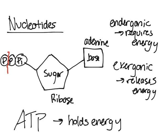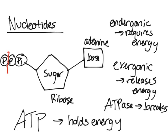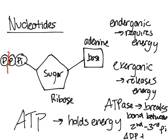The molecule that hydrolyzes the bond is called ATPase. It breaks the bond between the second and third phosphate group, known as Pi. When it breaks up, it breaks up into ADP and a phosphate group.